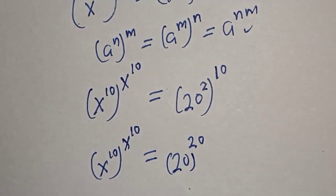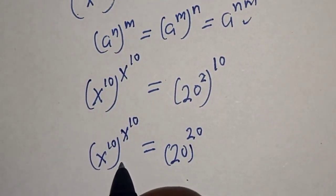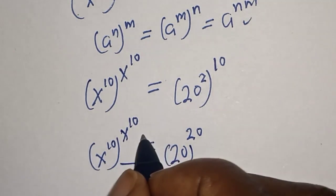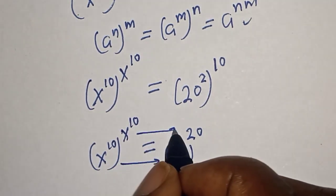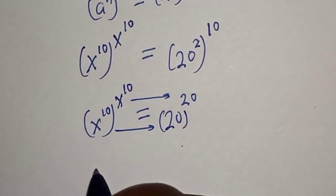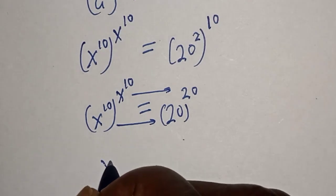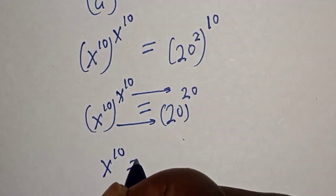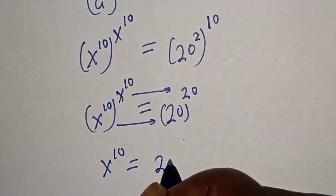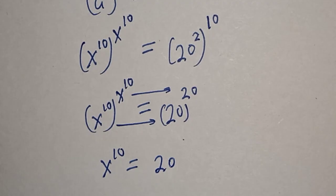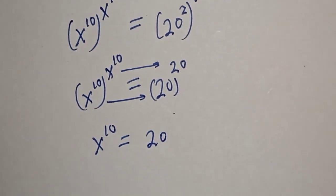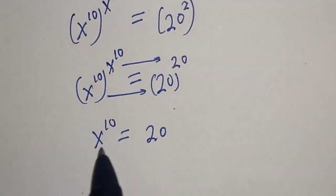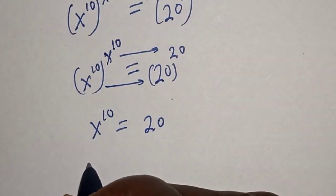Comparing both sides, the bases and exponents must match. Therefore s raised to power s raised to power 10 is equal to 20 raised to power 10, which means s raised to power 10 equals 20 raised to power 10.